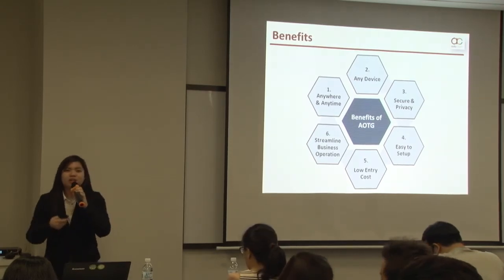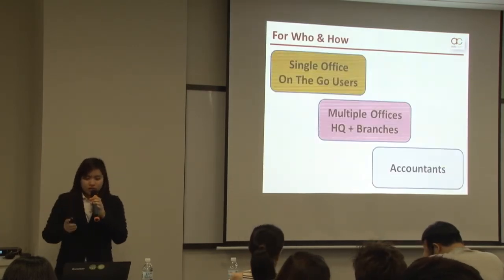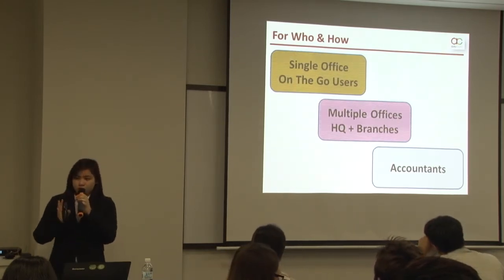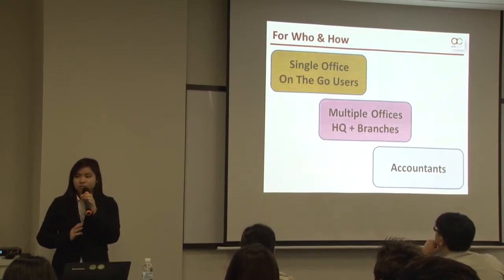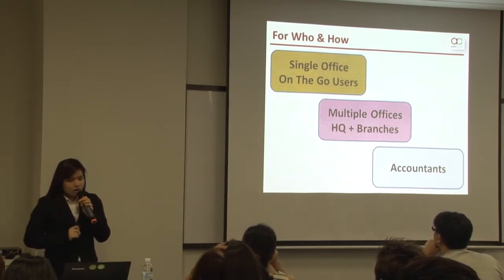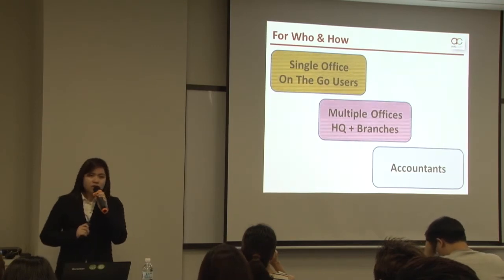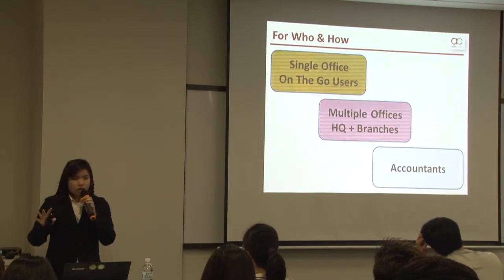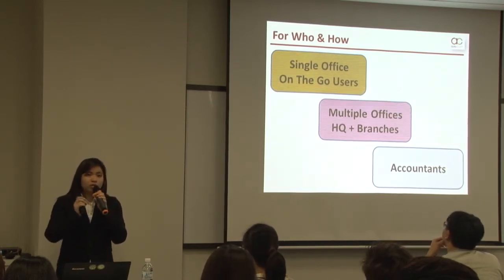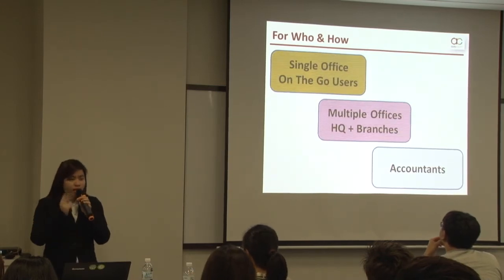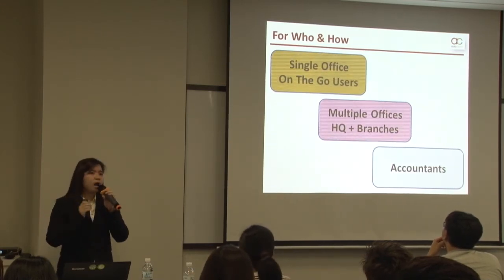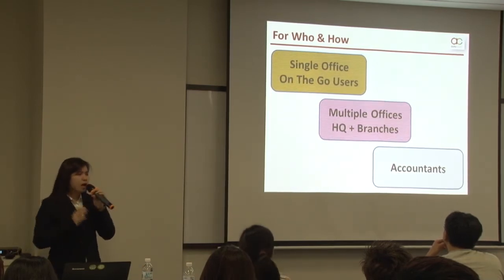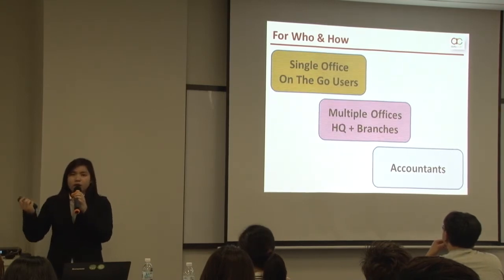AOTG is practically useful for three main categories of users. Number one is for businesses with only one office but with many people on the go who need to access the AutoCount Accounting database. The second category is for businesses with multiple offices or multiple branches that need to centralize the accounting database at HQ.